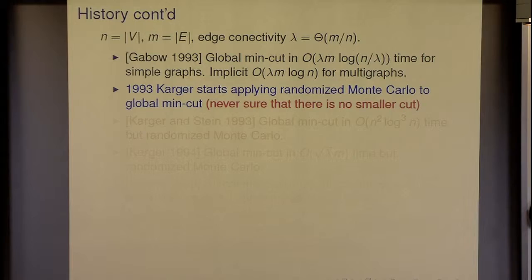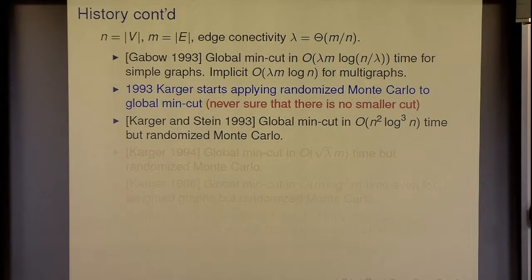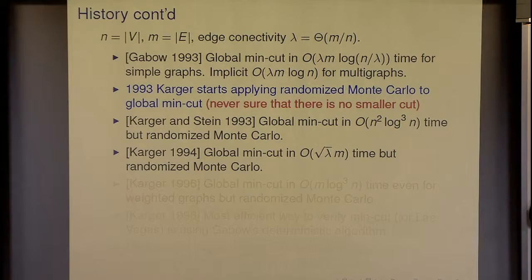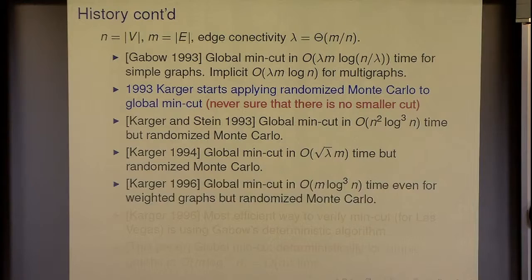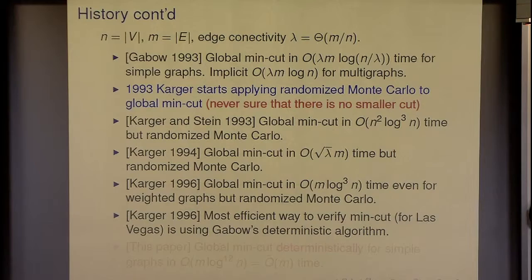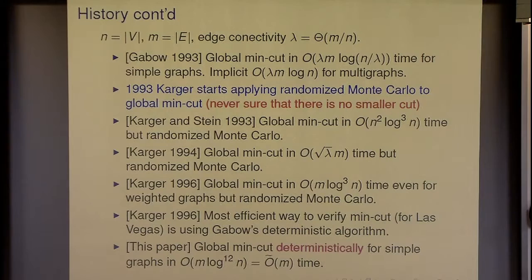Then Karger started doing his wonderful Monte Carlo work. There's a textbook algorithm of random edge contraction — absolutely beautiful — that gets down to quadratic time together with Stein. He then improved on Garbo's bound, getting down to square-root lambda, though it's Monte Carlo so it can't guarantee the cut is smallest. Finally he found the global min-cut in near-linear time — a really nice breakthrough — but as he said, there's no way of verifying you actually have a minimum cut.